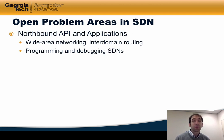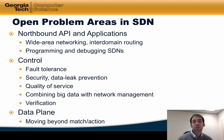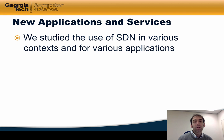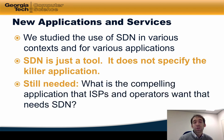There are several important open problem areas in SDN. One is in the development of the Northbound API and applications that use it. One important application domain that sits on top of the Northbound API is wide area networking and inter-domain routing. Another is programming and debugging. The area of control presents many exciting challenges, such as how to design a fault-tolerant SDN, how to use SDN to enforce security properties or quality of service, how to use big data to help improve network management, and how we can continue to push on concepts of verification to make verifiable, reliable SDNs. Another important challenge in the data plane is how we move programmable hardware beyond simple match-action primitives. In the context of new applications and services, we've studied the use of SDN in various contexts, but it's important to note that SDN is just a tool — it does not specify what the killer application actually is. So we're still looking for many of the compelling applications that ISPs and operators want that could not be solved without SDN.